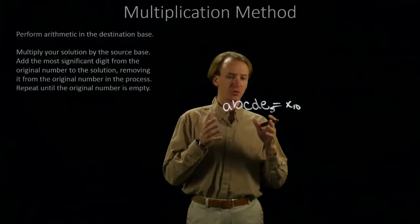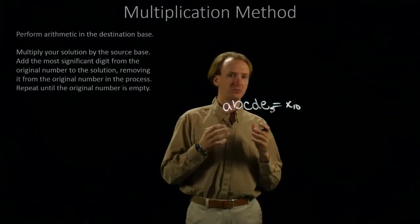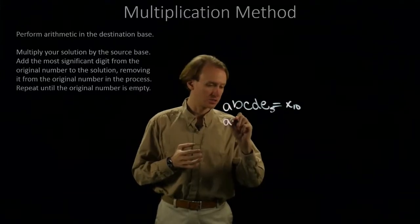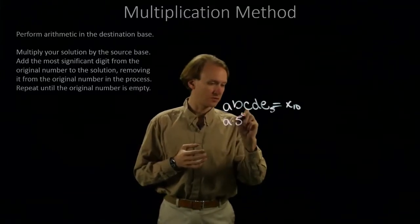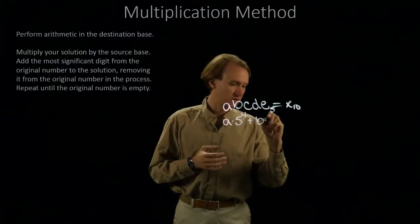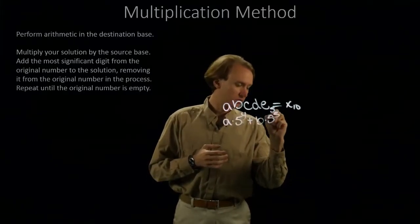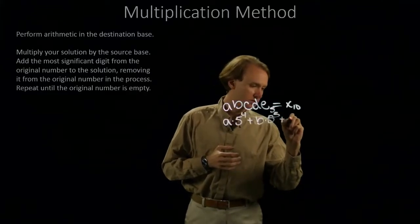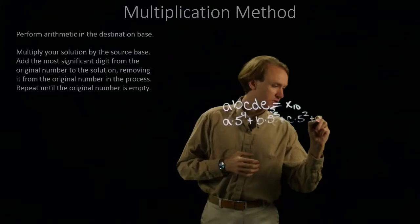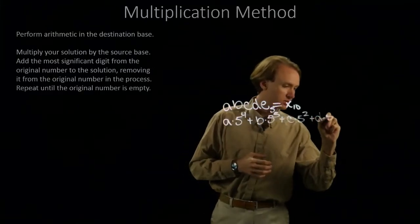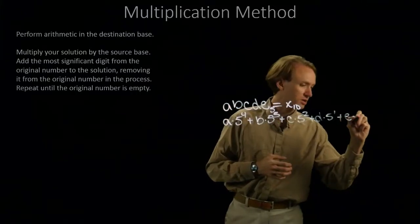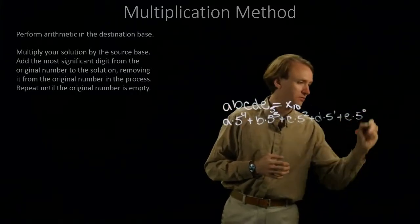So, the first thing I really want to do is look at what this number means in base 5. So, this is A times 5 to the 4th plus B times 5 cubed plus C times 5 squared plus D times 5 to the 1st plus E times 5 to the 0.